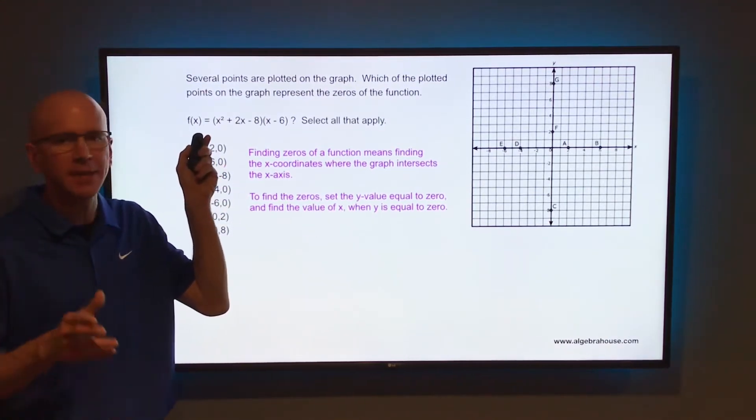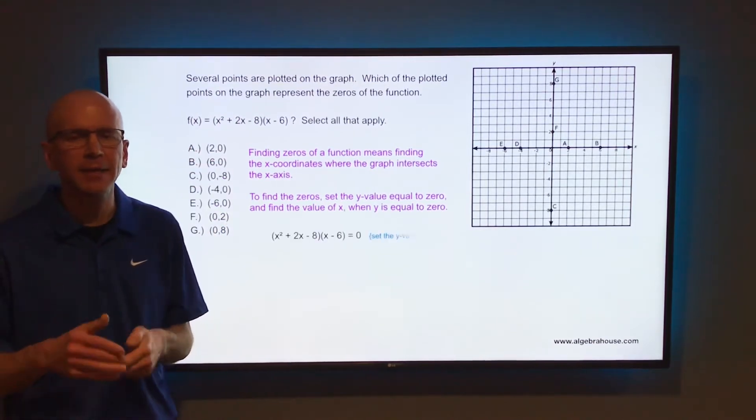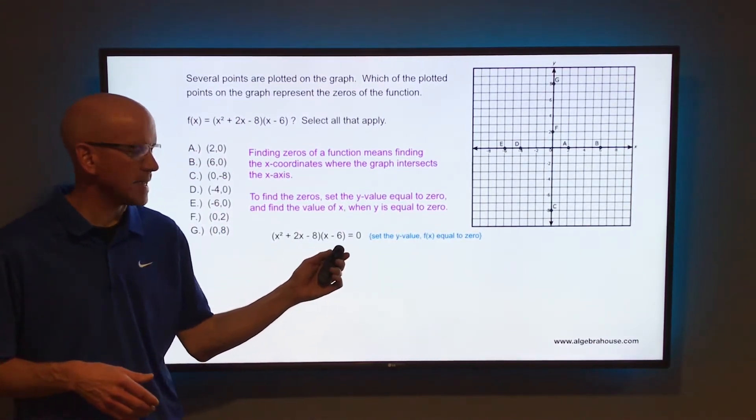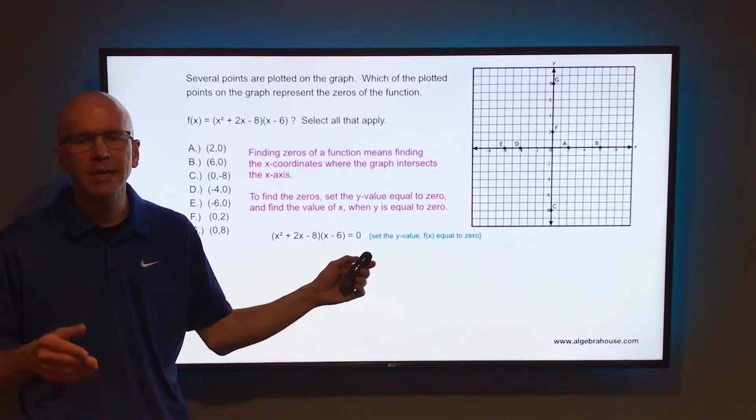So we're going to take that f(x), that is the y value, and set that equal to zero. If you do, we have x² + 2x - 8 times (x - 6) = 0.